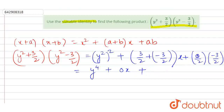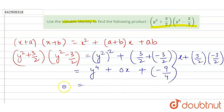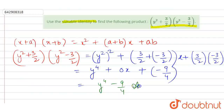So y squared squared, plus — 3 times 3 is 9, and minus 3 times minus 3 is minus 9, over 2 times 2 which is 4. So the answer is y to the power 4, minus 9 by 4. Your answer. Thank you.